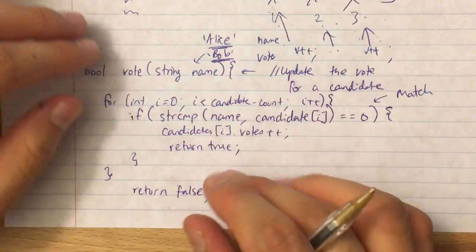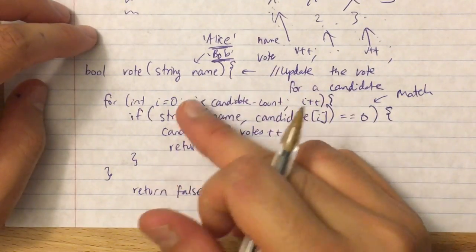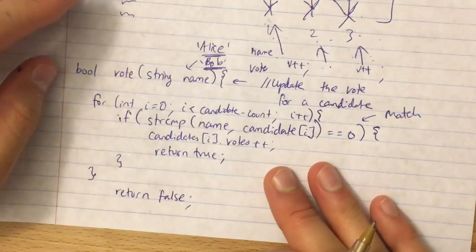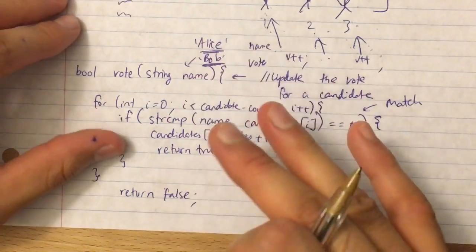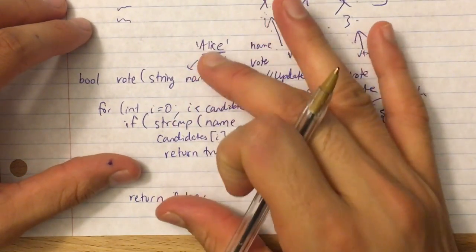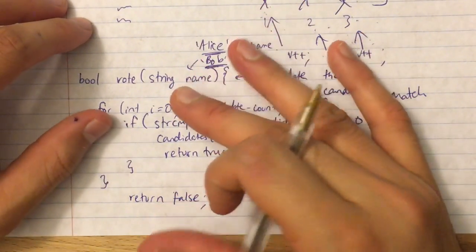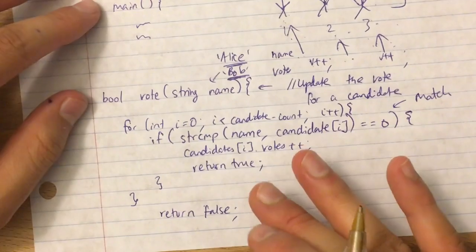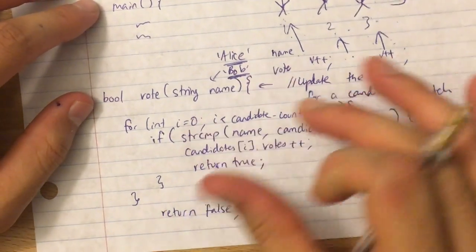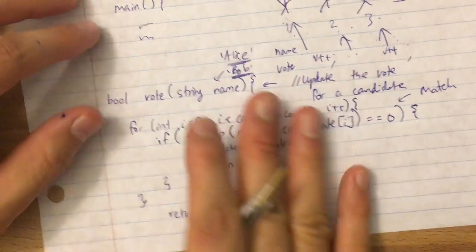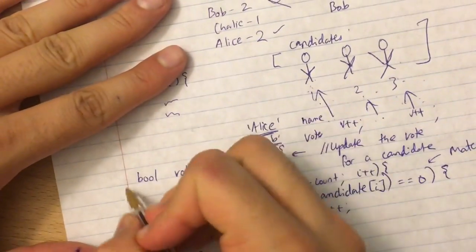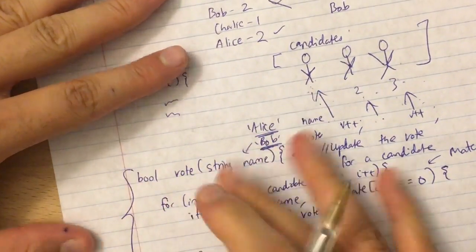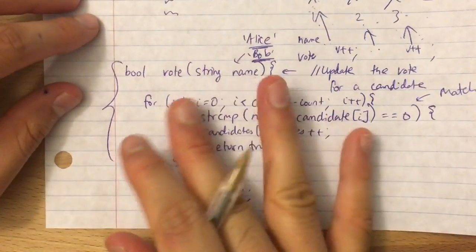If we loop through the entire candidates array and didn't find the candidate, we return false. That's the vote function — pretty straightforward. The other function is print_winner.